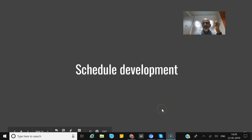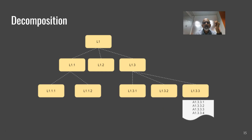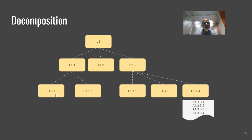Let us discuss schedule development. We discussed the work breakdown structure — here is a picture of a WBS which has multiple levels: level 1, 1.1, 1.2, 1.3, and the next level 1.1.1. The lowest level we call work packages, and the work packages we decompose into activities.